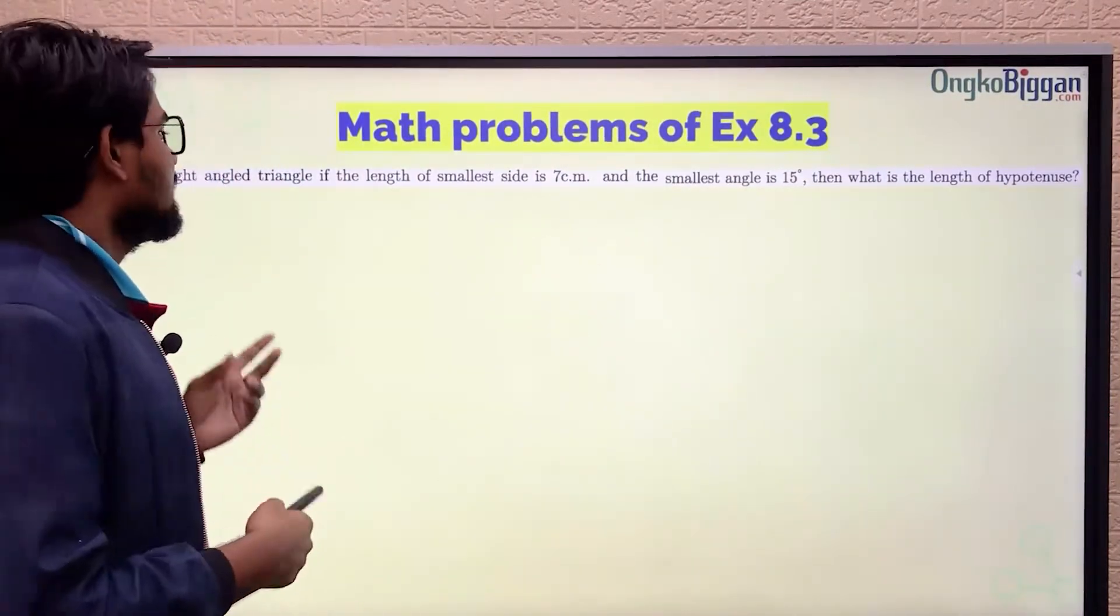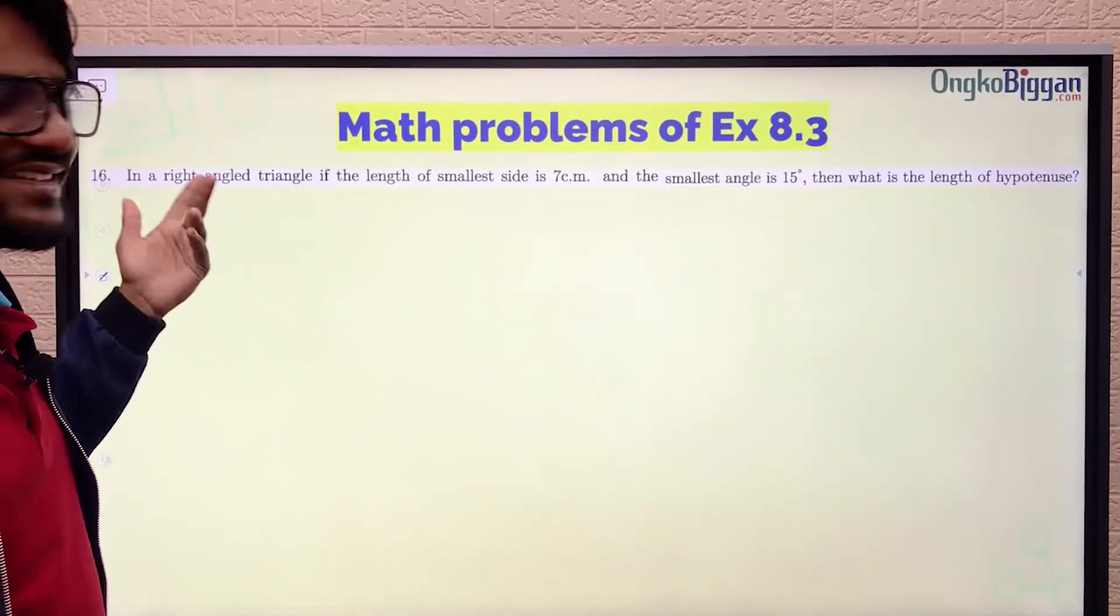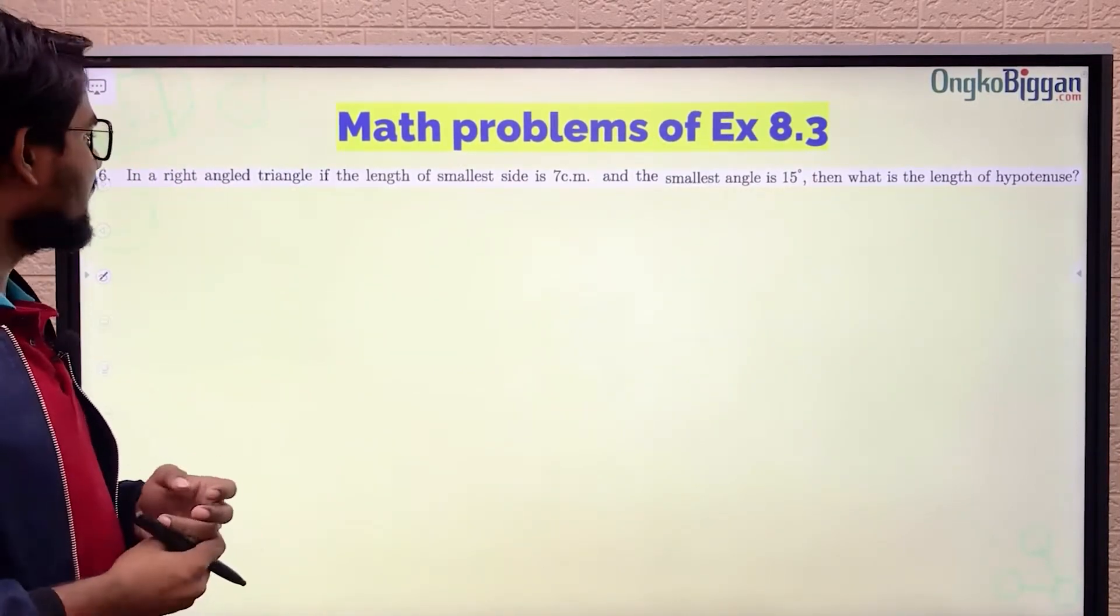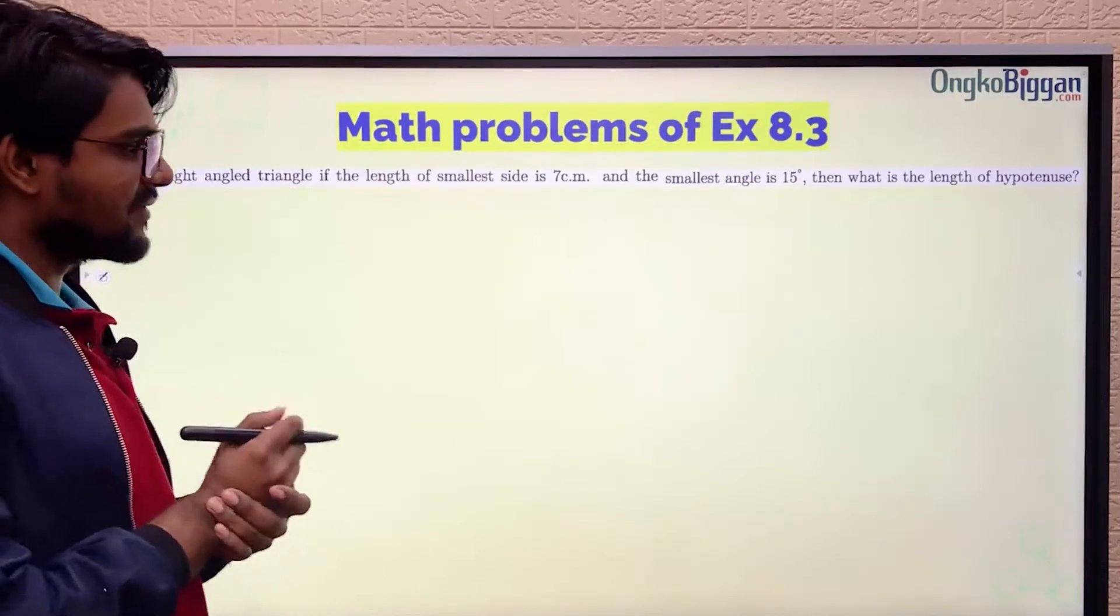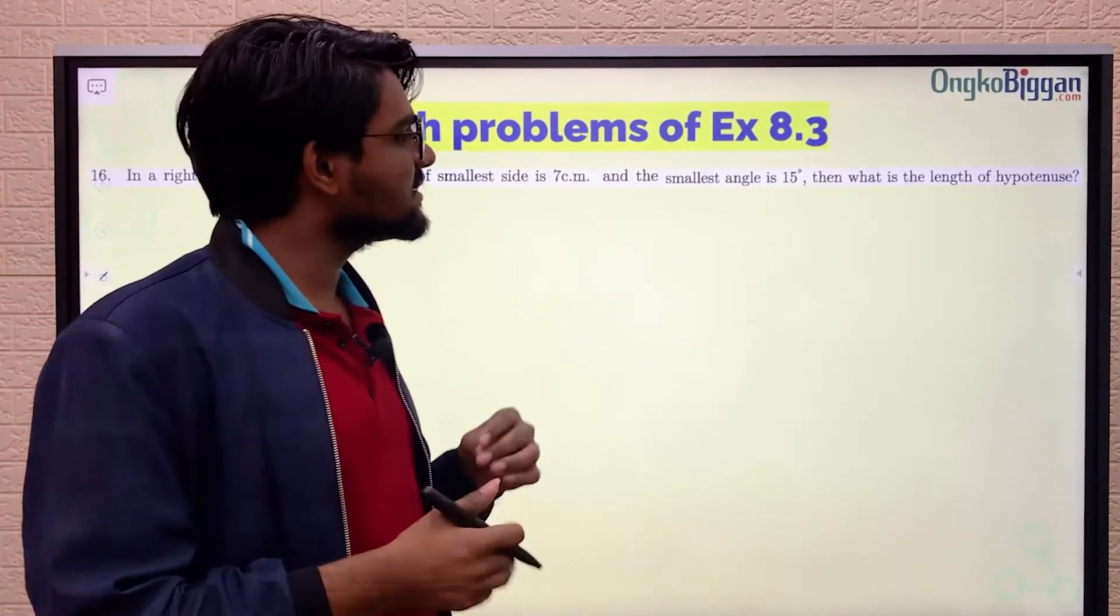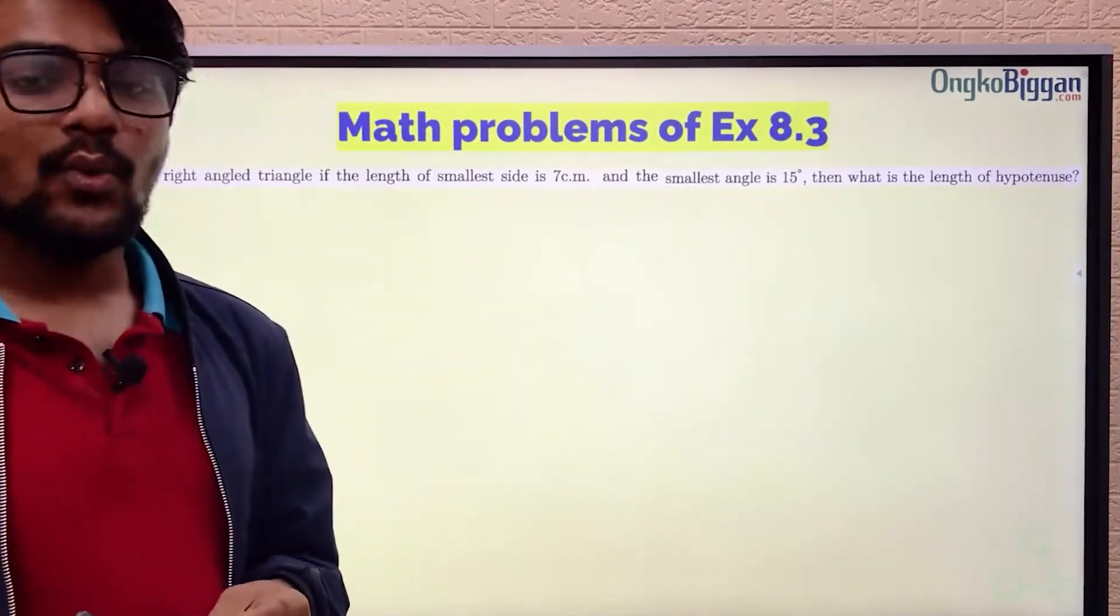In this math problem, it is written: In a right-angled triangle, if the length of the smallest side is 7 centimeters and the smallest angle is 17 degrees, what will be the length of the hypotenuse?